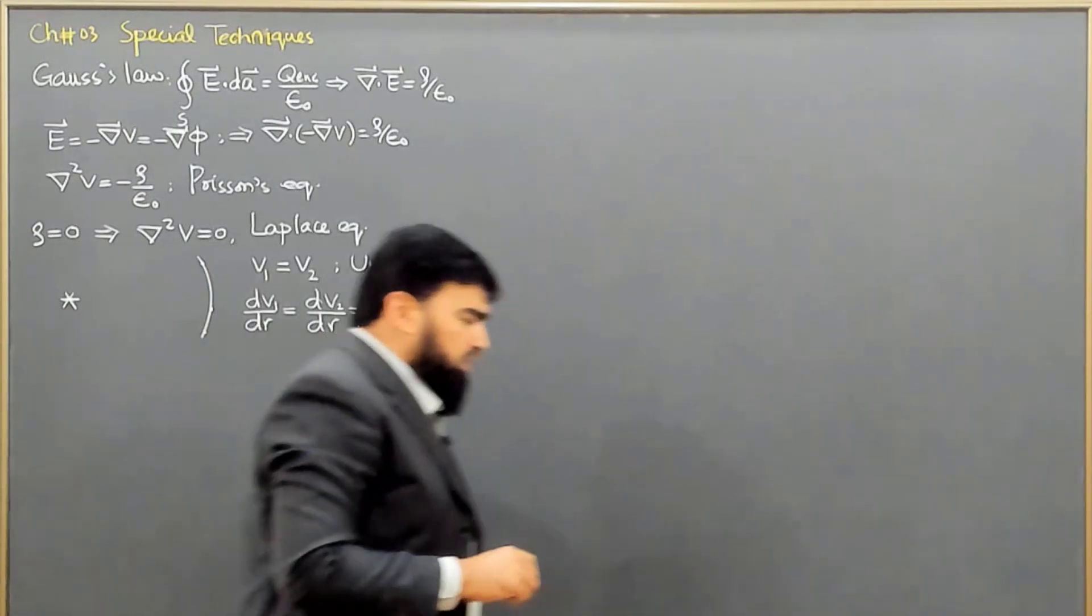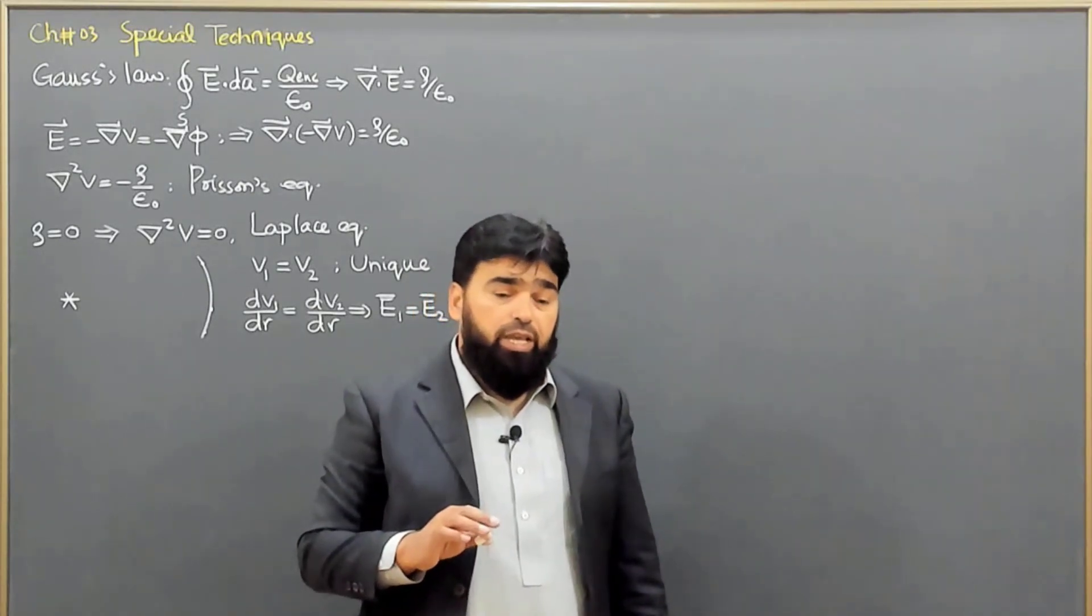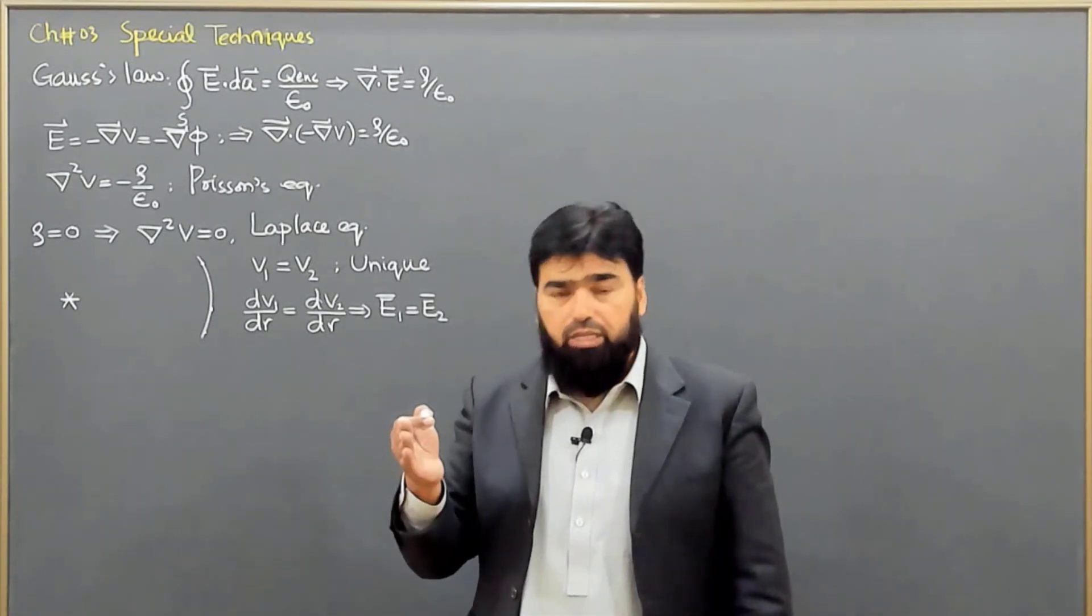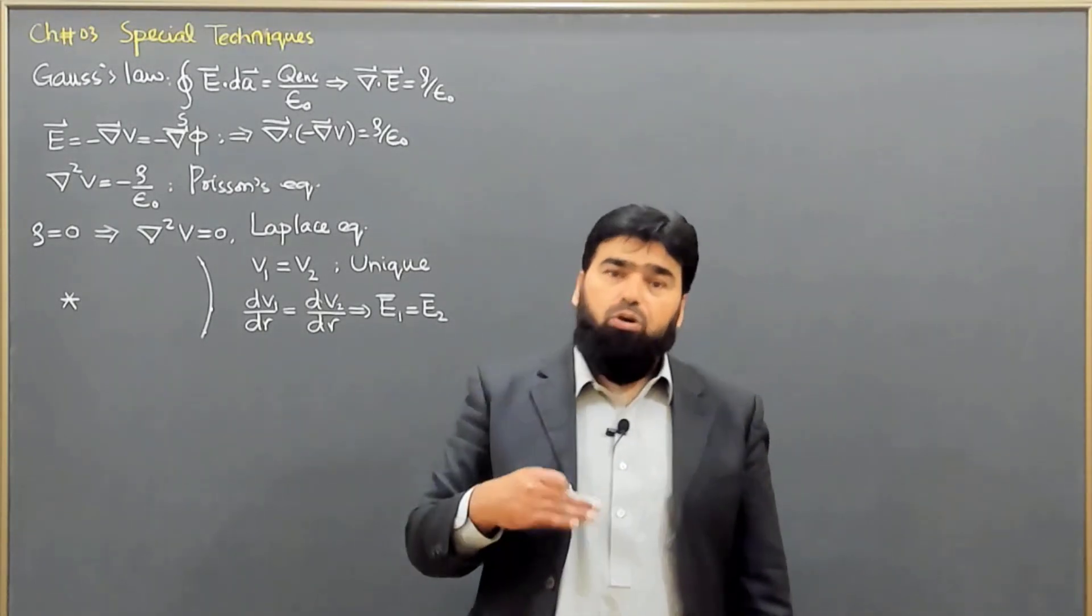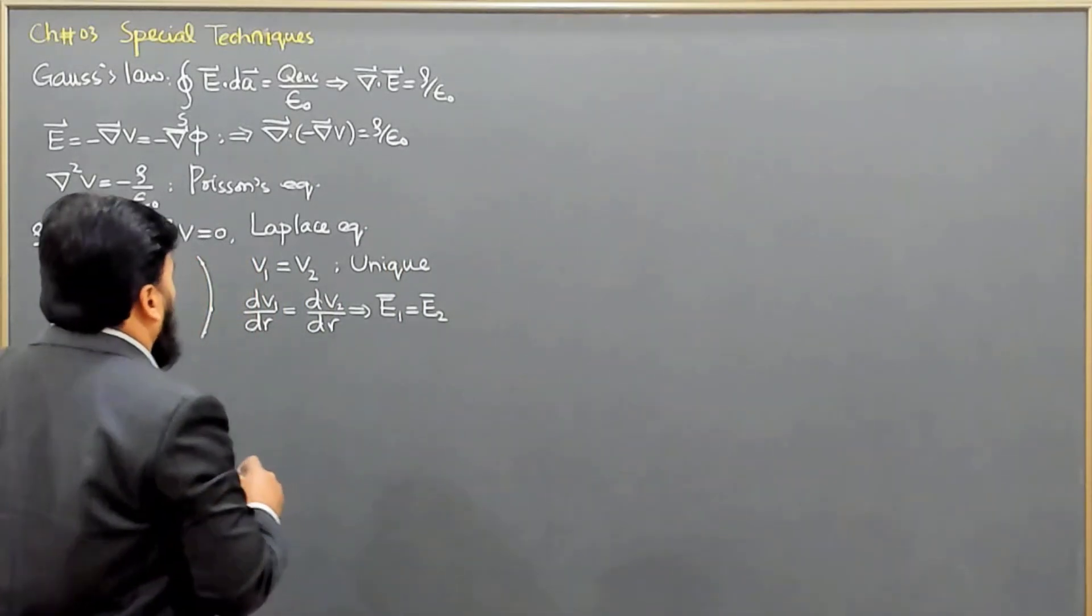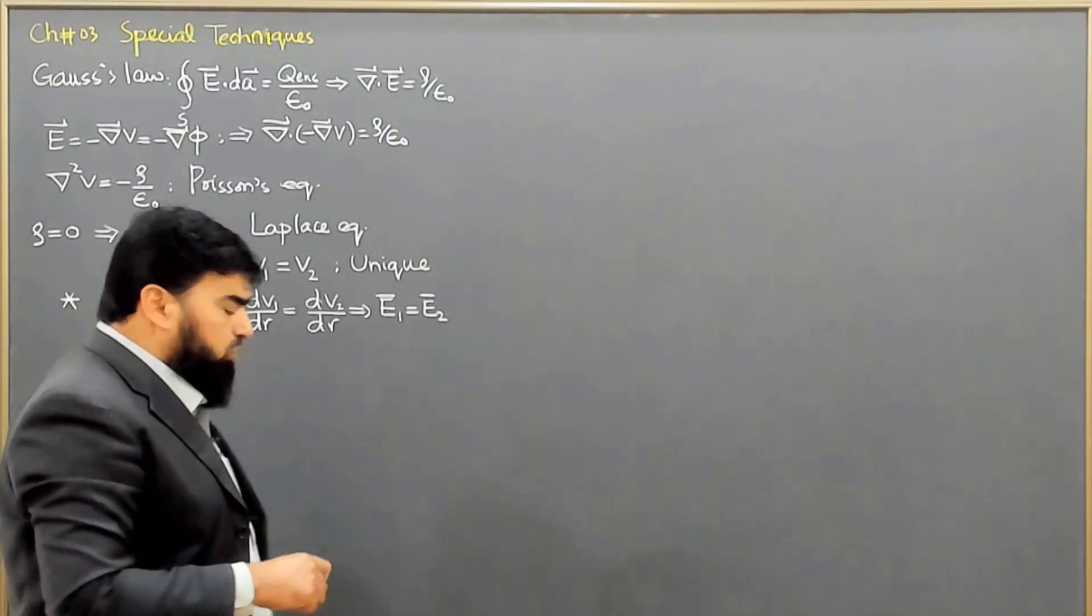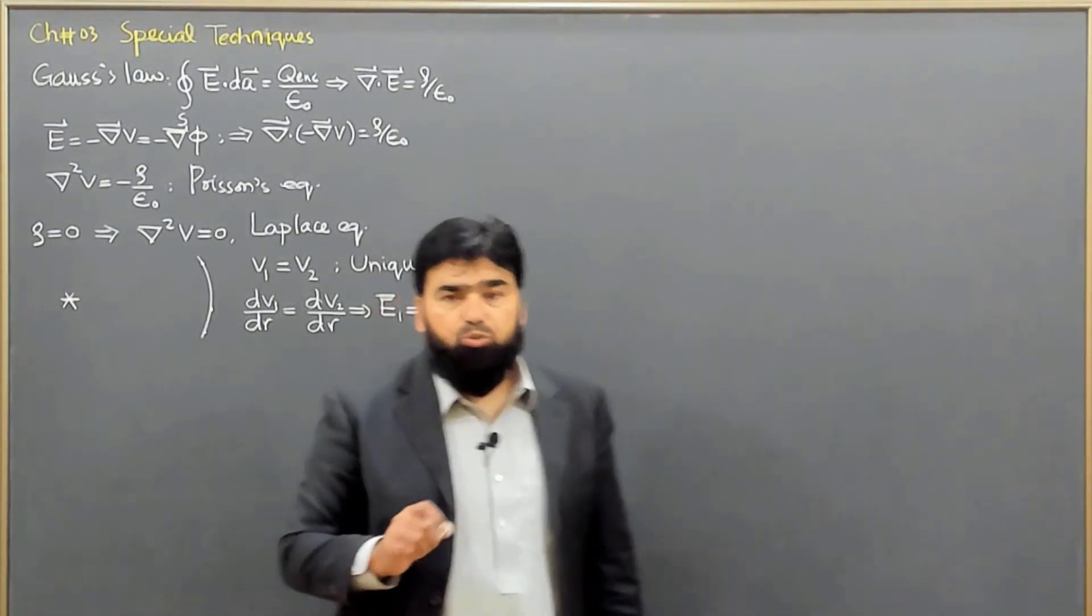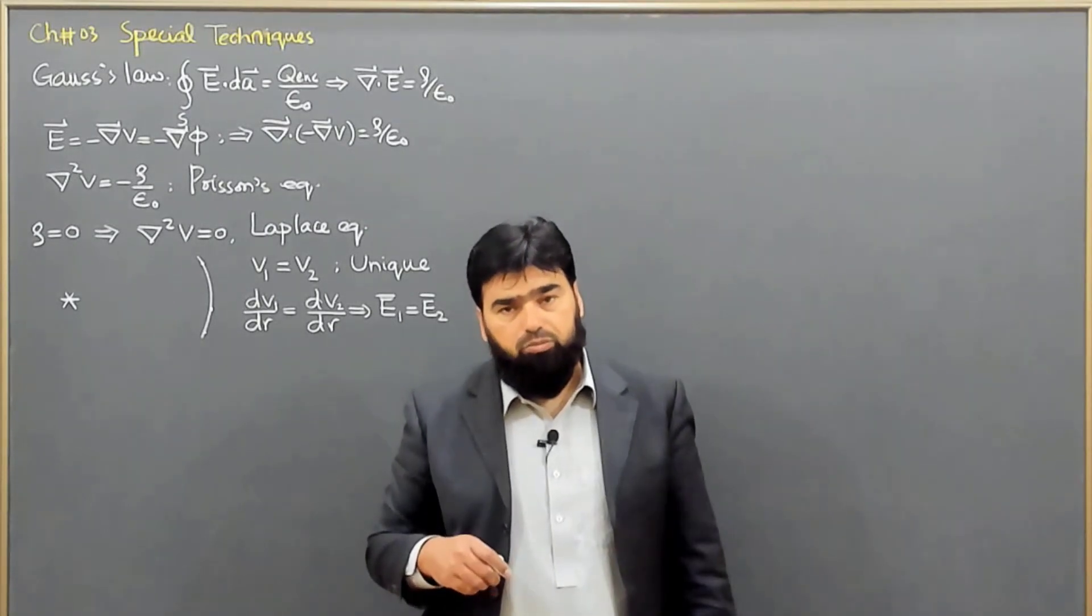And this implies that even the electric field on the boundary will also be unique or the same. So, this is something like wherever we specify boundary conditions on a surface or on a boundary, then we say that the quantity, the physical quantity will remain the same on both sides of the boundary. And the derivative of that physical quantity will also remain the same. So, these are basically the uniqueness theorem or the uniqueness of the solution. When we will solve the Laplace equation or the Maxwell equations, we must have a unique solution.